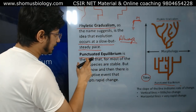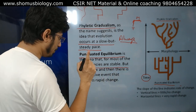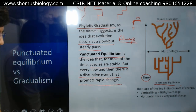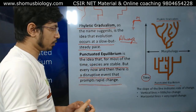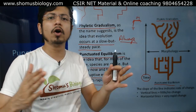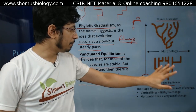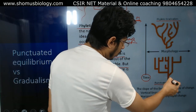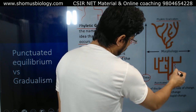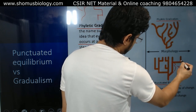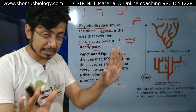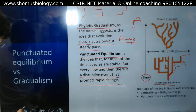Punctuated equilibrium suggests that most of the time species are stable, but every now and then there is a disruptive event that prompts a rapid change in the population — a change in the species — and that is how new species come into existence and how evolution occurs. So for a long period of time there is no change, then a sudden morphological change, again no change, then another sudden morphological change.